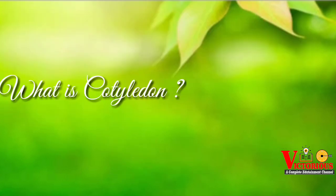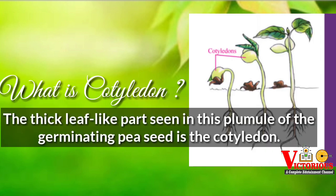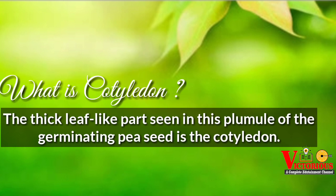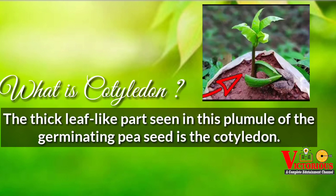Then, what is a cotyledon? The thick leaf-like part seen in the seedling of the germinating seed is called the cotyledon.